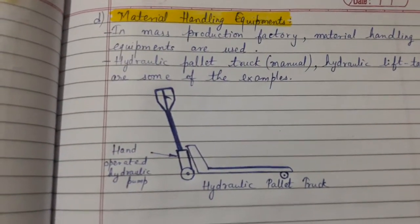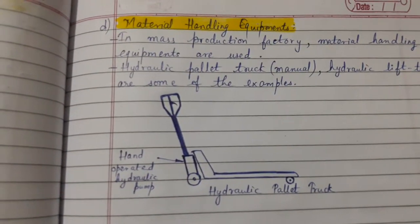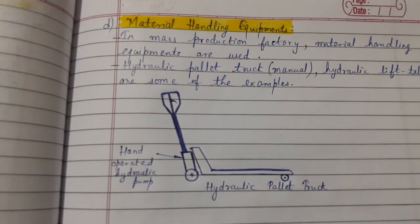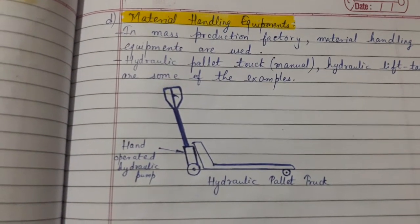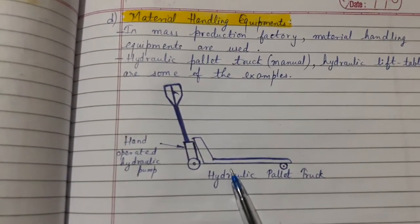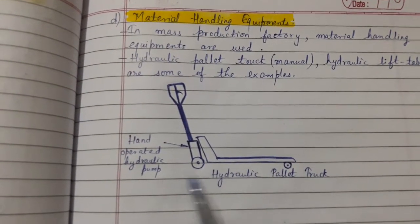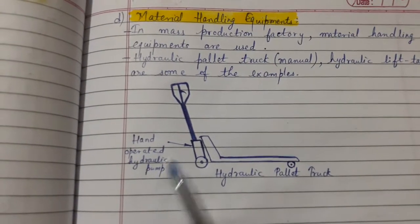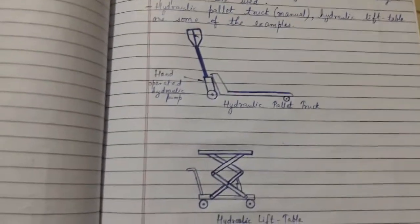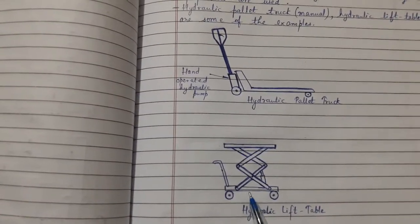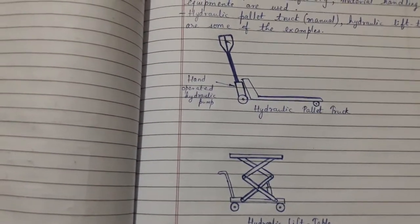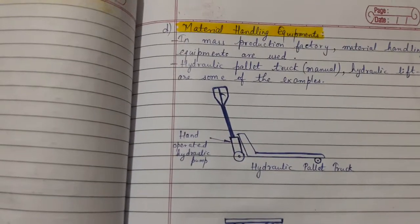The next application is material handling equipment. In mass production factories, material handling equipments are used. The hydraulic pallet truck — that is manual — the hand-operated hydraulic pump, and the hydraulic lift table are a few examples of material handling equipment.